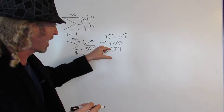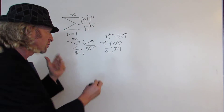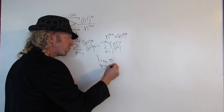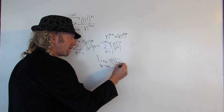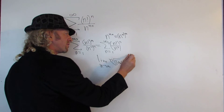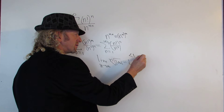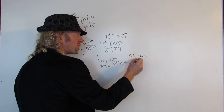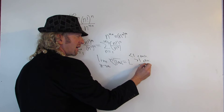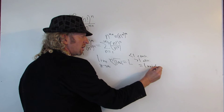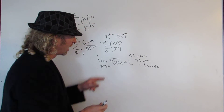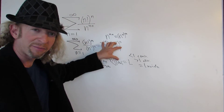The root test says if you have something to the nth power and you take the limit — basically if you take the limit of the nth root of this and you get L — if L is less than 1 then your series converges, if L is bigger than 1 then your series diverges, and if L is equal to 1 then there is no information; the root test fails.